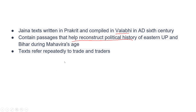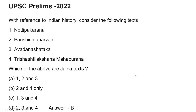Jain texts repeatedly refer to trade and traders, who played a very important role. A UPSC question asks: 'With reference to Indian history, consider the following texts.' Try to understand the options — research them and drop your knowledge in the comment section below, as sharing knowledge helps you gain knowledge.